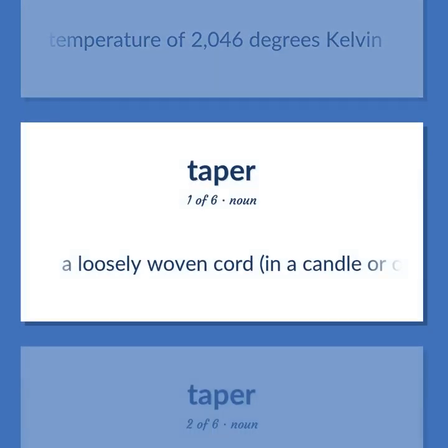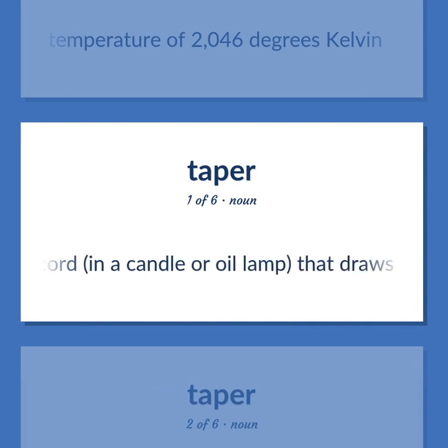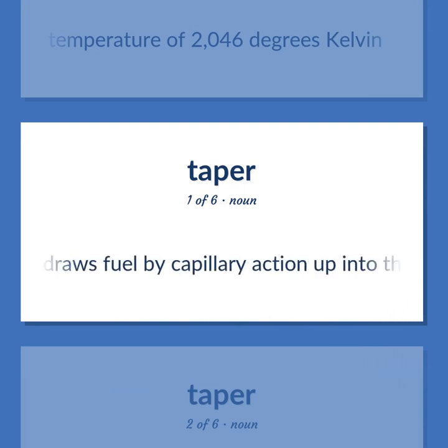Wick: a loosely woven cord in a candle or oil lamp that draws fuel by capillary action up into the flame.